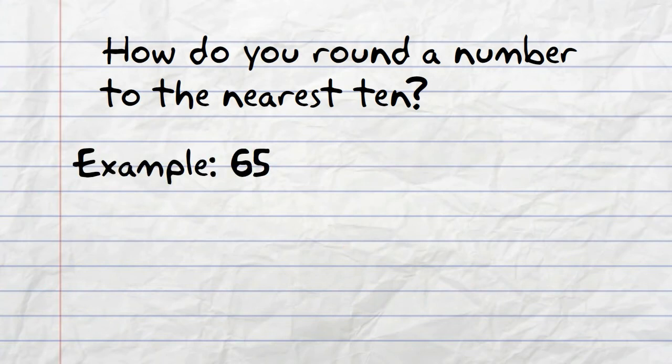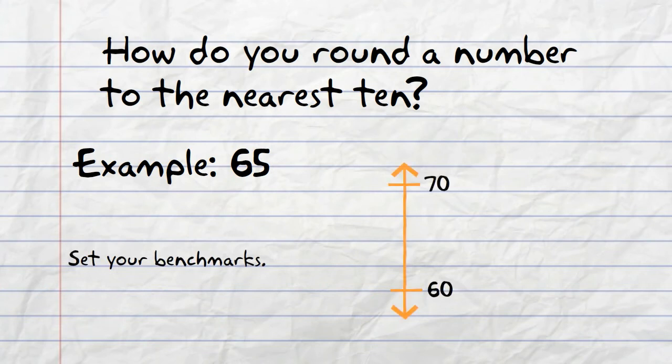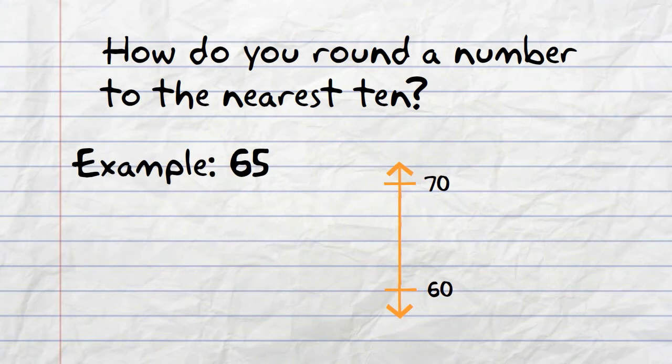Let's check out another example. Let's try to round 65 to the nearest 10. Since it's to the nearest 10, our benchmarks would be 60 and 70. The next step would be to determine your midpoint. The midpoint between 60 and 70 would be the halfway point, which is 65.